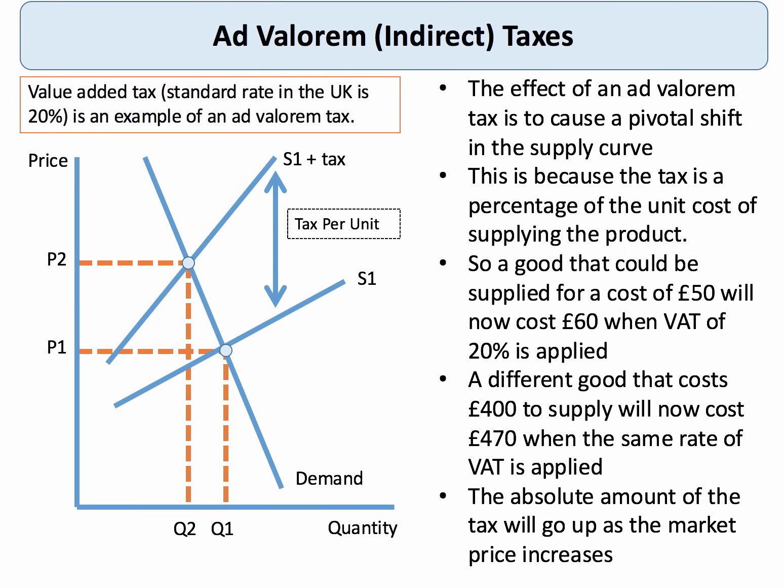Let's take the example of indirect taxes. To be different, we're going to look at ad valorem taxes — percentage taxes — such as a sales tax like the 20% VAT rate applied to a large number of products. Here's our diagram. An ad valorem tax causes a pivotal shift in the supply curve.